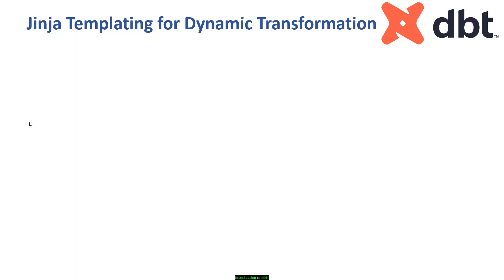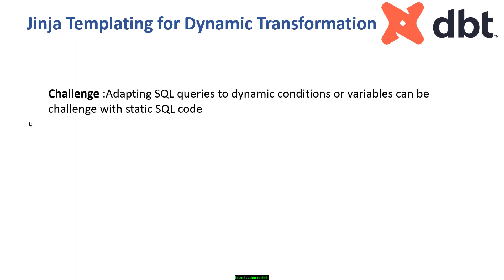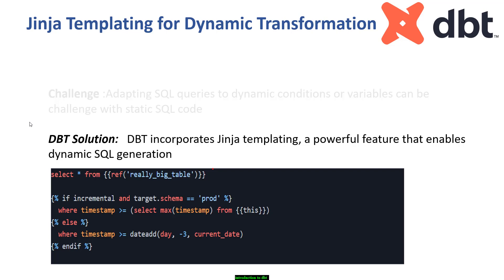Another powerful feature is Jinja templating. Adapting SQL queries to dynamic conditions or variables can be challenging with static SQL. dbt incorporates Jinja templating, a powerful feature that enables dynamic SQL generation. Those already doing Python coding — particularly with the Flask web framework — will be familiar with Jinja templating. It allows you to create flexible and adaptive transformations that adjust to varying conditions and parameters.